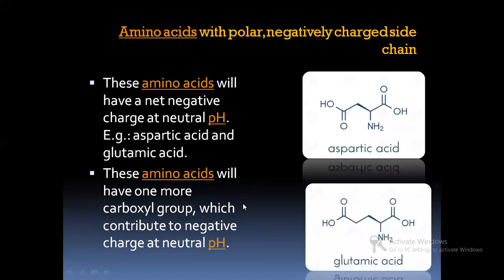The third class: amino acids with polar negatively charged side chain. These amino acids have a net negative charge at neutral pH. Examples are aspartic acid and glutamic acid. These acids can be easily identified because apart from one COOH group and one NH2 group, they have one more COOH group attached to the ketonic group.